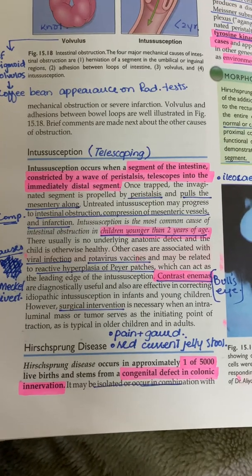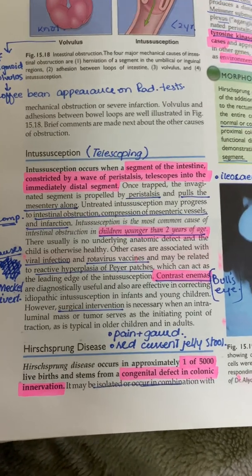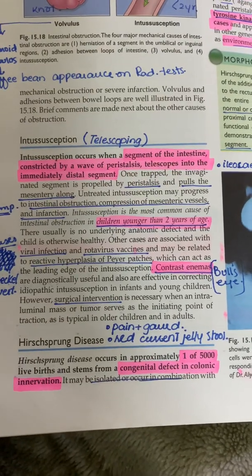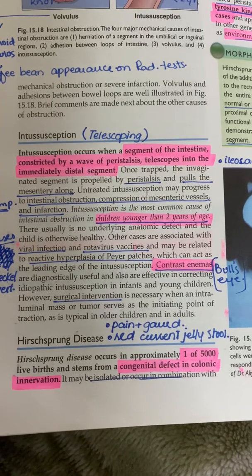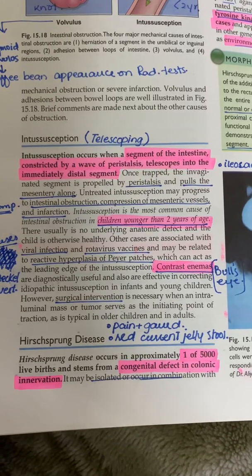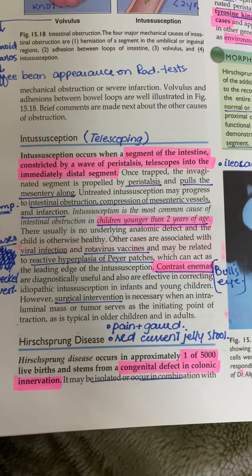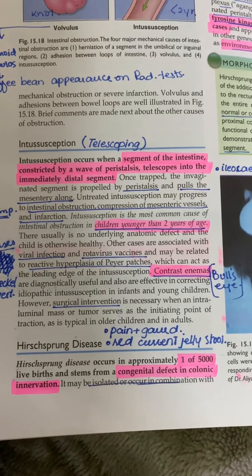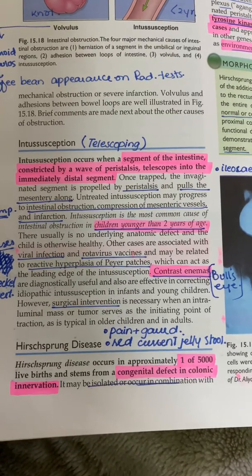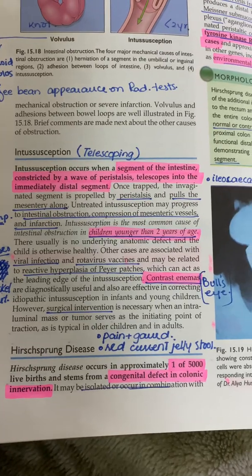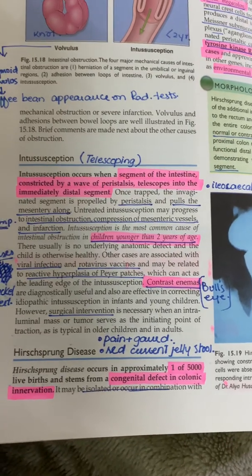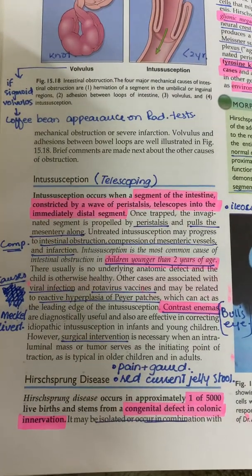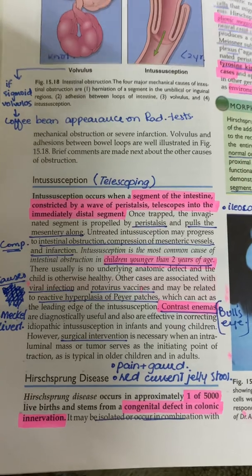The complications of untreated intussusception include obstruction, mesenteric vessel compression, and infarction. It occurs in children less than two years of age, and causes include peristalsis, viral infection due to rotavirus or norovirus, and reactive hyperplasia of the Peyer's patches. We can diagnose intussusception by barium and air enemas, and a bull's eye appearance may be seen radiologically. Surgery is necessary for correction.